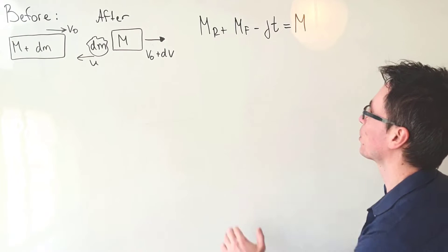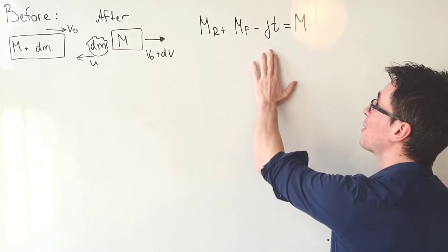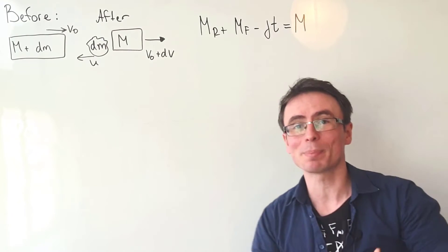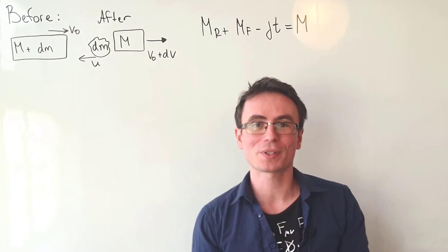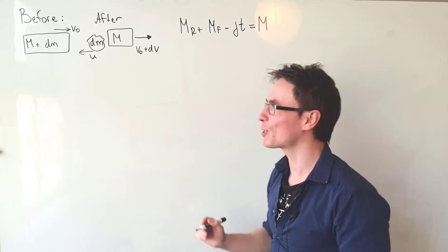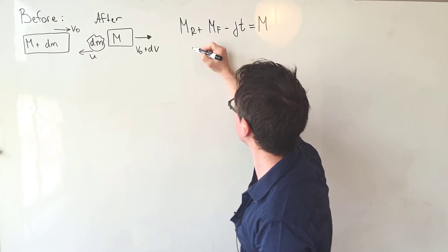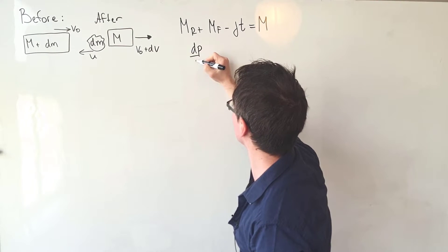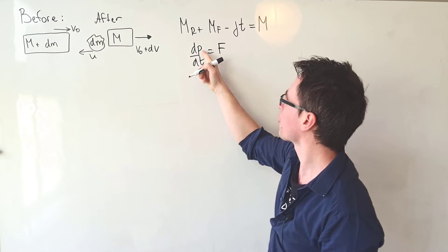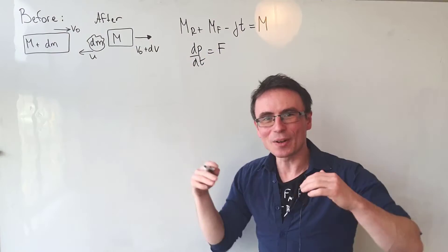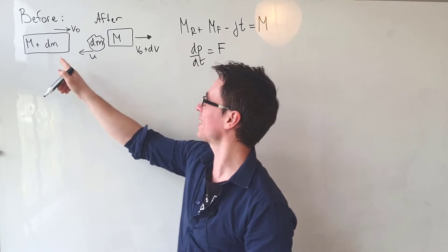To make things easier, I'm going to define the mass of the rocket plus the mass of the fuel minus the mass that's been ejected as m, which is a function of time. We're going to tackle this question by considering Newton's second law: the net force equals dp/dt, so we need to find the change in momentum.